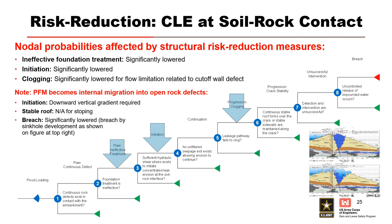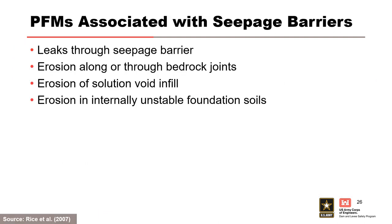For internal migration, only a downward vertical gradient is needed for initiation. A stable roof is not applicable for stoping, and the breach mechanism becomes sinkhole development. Installation of structural risk reduction measures like cutoff walls can also introduce new potential failure modes as the flow regime is changed. This presentation discusses the first three potential failure modes listed here: leaks through seepage barriers, erosion along or through bedrock joints, and erosion of solution void infill.